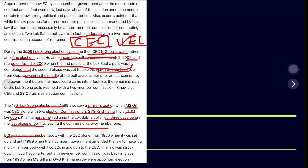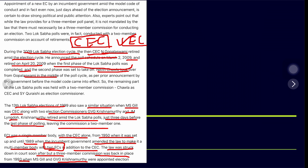For your information, the Election Commission of India was a single-member body with CEC alone from 1950 until 1989. In 1989, the government amended the law to make it a multi-member body with two election commissioners. The law was struck down in court, but a three-member commission was back in place in 1993 when MS Gill and GVG Krishnamoorthi were appointed. For GS2, you can frame answers on how the appointment process has changed, or why the CJI was removed from the process, and whether this change by Parliament is valid.